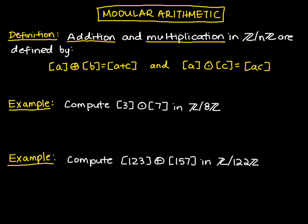Let's see how this works. We look at the following example where we're asked to compute the product of the congruence class of 3 times the congruence class of 7 in Z mod 8Z.